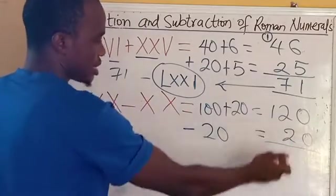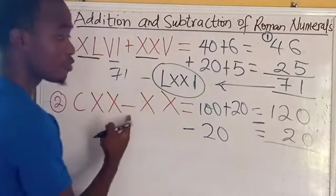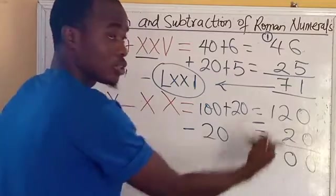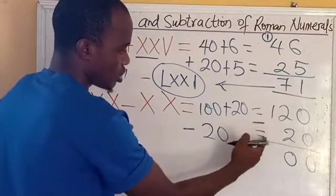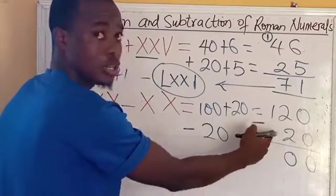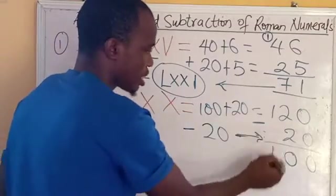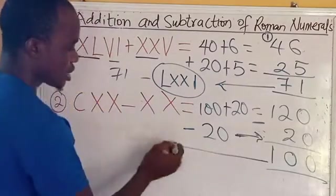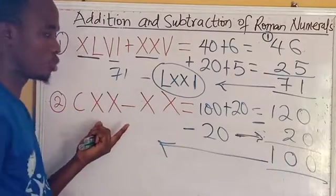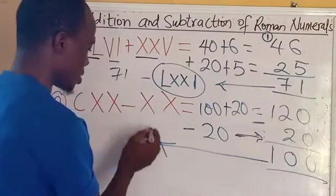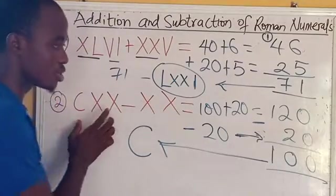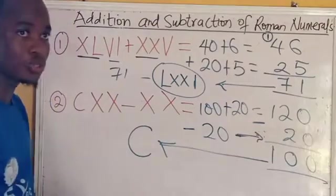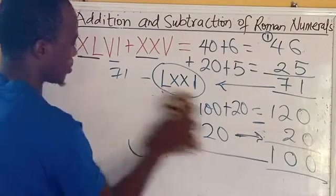20 plus nothing, we don't have anything here, so we have 20 here. The next thing is to subtract. Don't forget it's subtraction from the question. This will be 0, 2 minus 2 will give us 0. Then 1 minus 0, because this place is nothing, 1 minus 0 is 1. Therefore when we subtract 20 from 120, we are going to have 100. Now let's take this back to Roman numerals. 100 is C, and that is the solution to this.